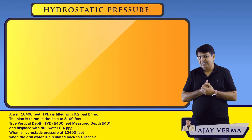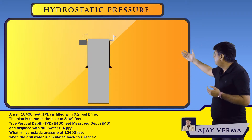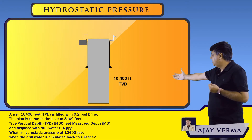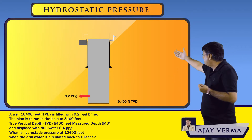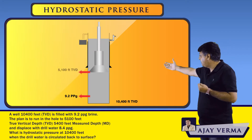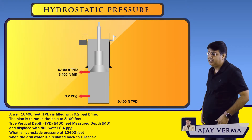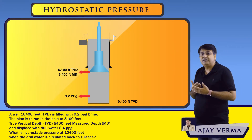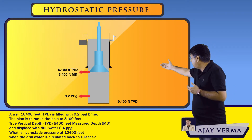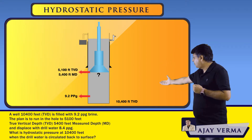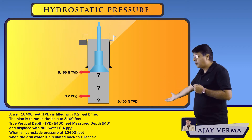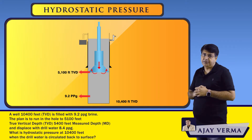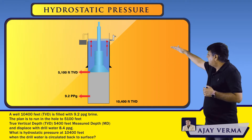Let us understand by drawing a figure. The well depth is 10,400 feet. There is a brine in the wellbore that is 9.2 ppg. If we run the bit to 5,100 feet TVD and 5,400 feet MD and circulate a lighter fluid, we need to decide from where the displacement would take place — whether from 5,100 feet or some other depth. The displacement will take place from 5,100 feet.